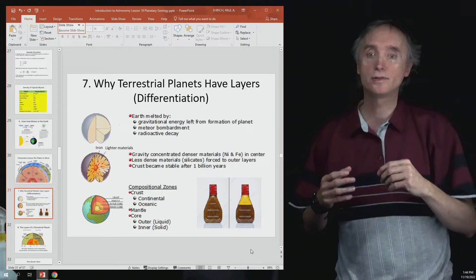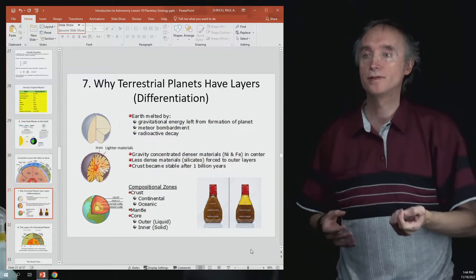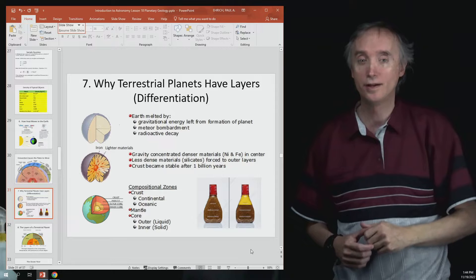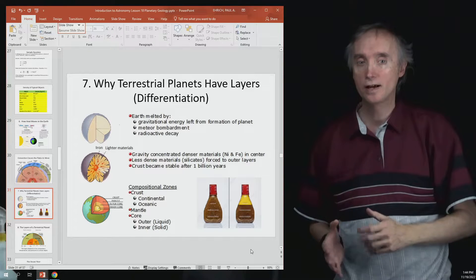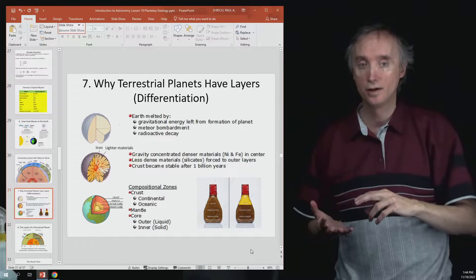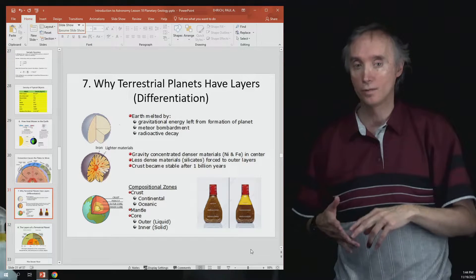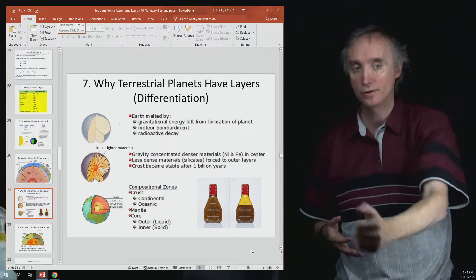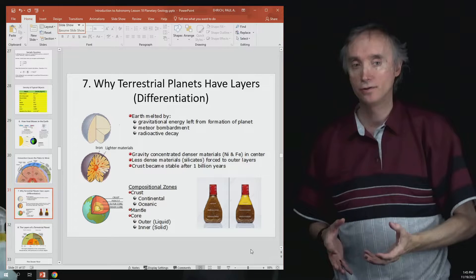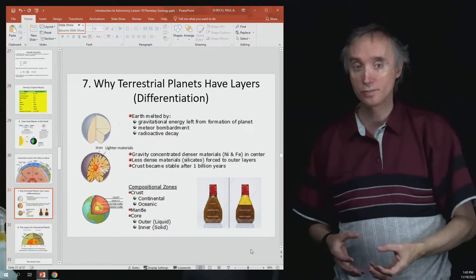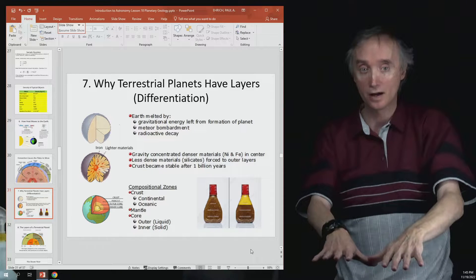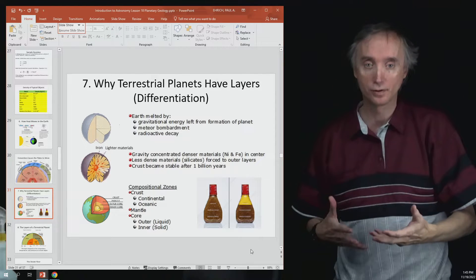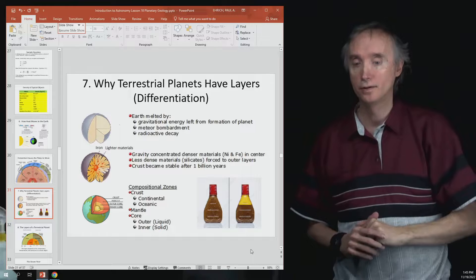If you want to do this to see how things separate because of density, you can do it with some Italian dressing. Get some Italian dressing that has tomatoes and bacon and oil and water and shake it up and then put it on the counter and see what happens. You'll notice that the tomatoes and the bacon and all those more dense materials go to the bottom and then you've got the water in between and then on the very top you've got the oil. Very similarly the material separated inside the Earth.